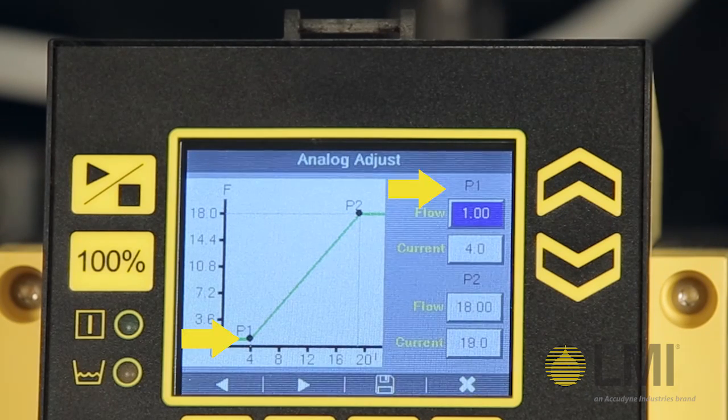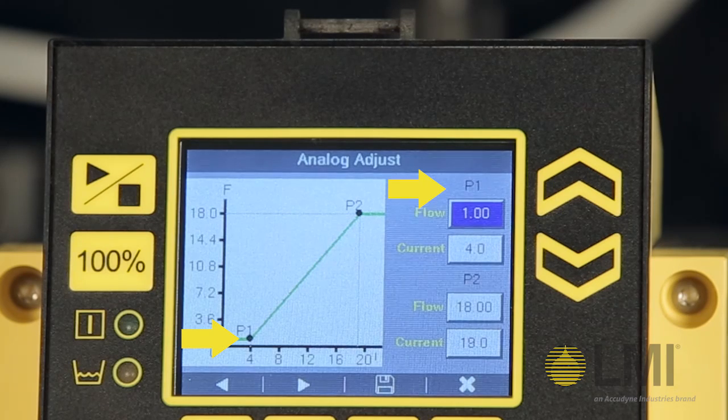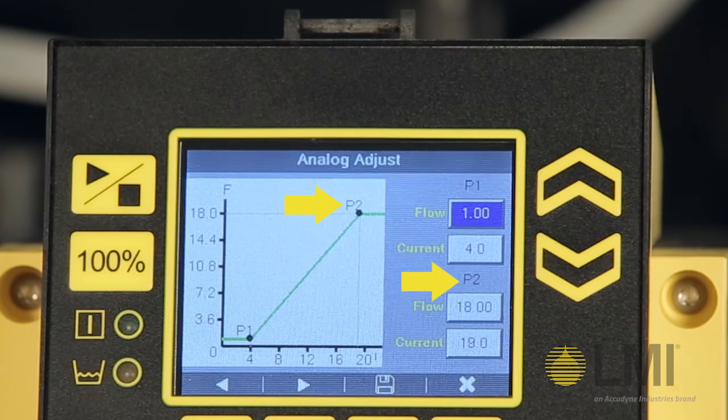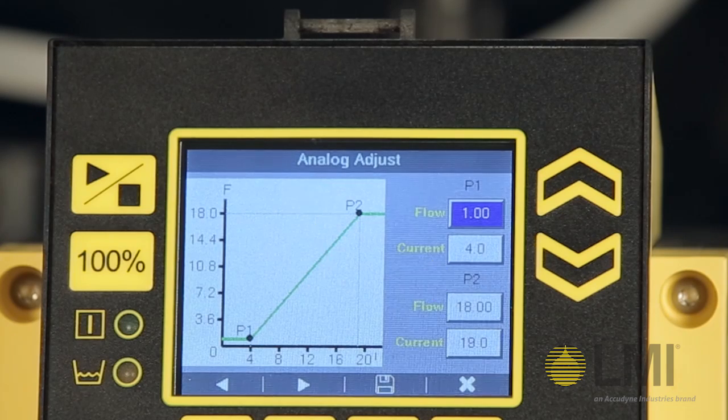This graph indicates set point 1 and 2. These set points are indicated on the right side of the display as P1 and P2.